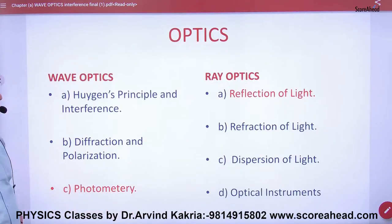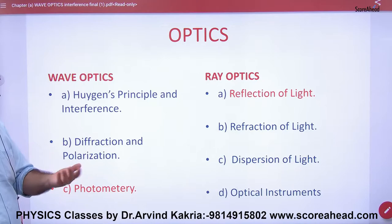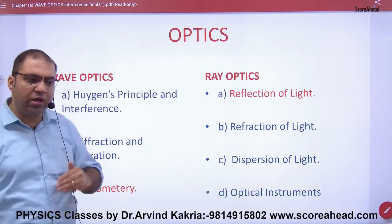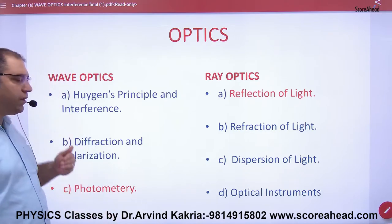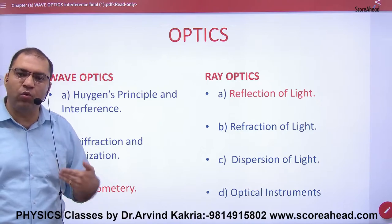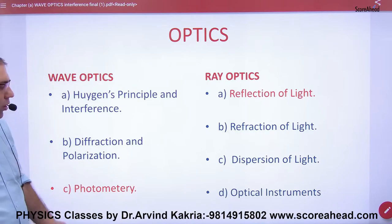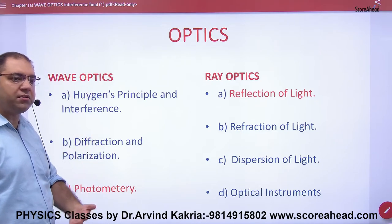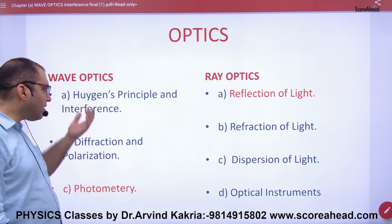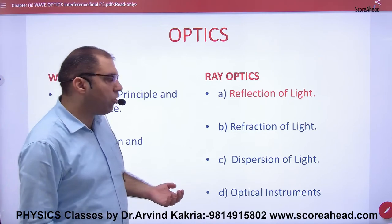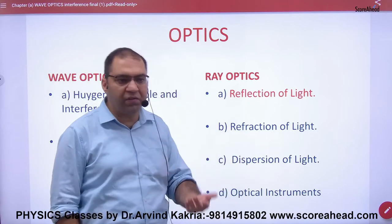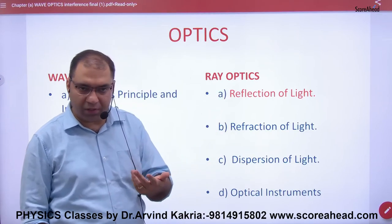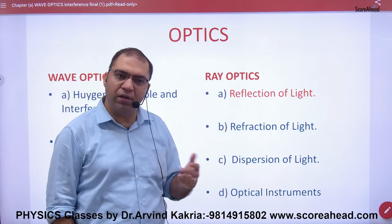So basically, if we divide optics according to phenomena: wave optics includes Huygens' principle, which tells us that light has a wave nature, and interference — which can only be explained on the basis of wave theory — as well as diffraction and polarization. These topics are classified under wave optics. And some phenomena such as reflection, refraction, dispersion, and optical instruments, which can be explained on the basis of ray theory, fall under ray optics.